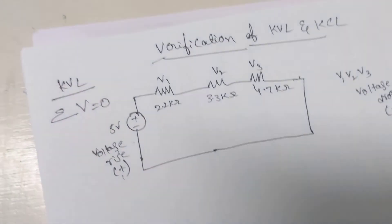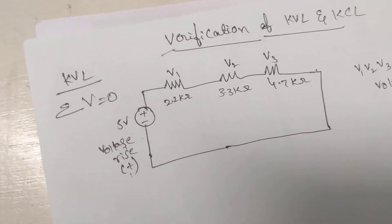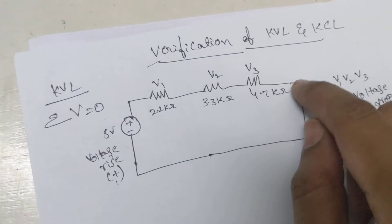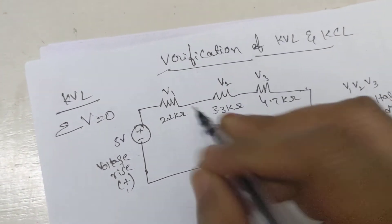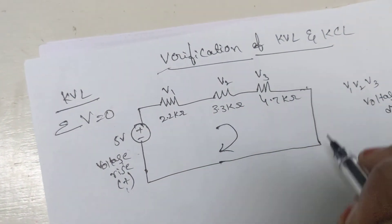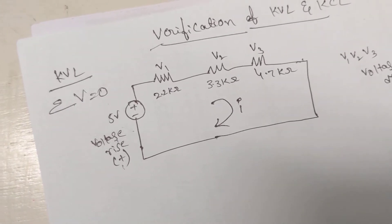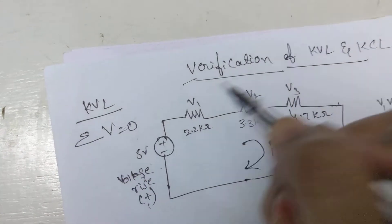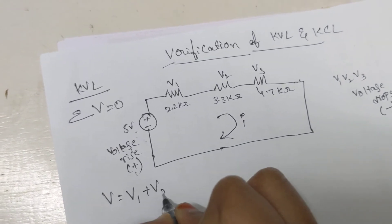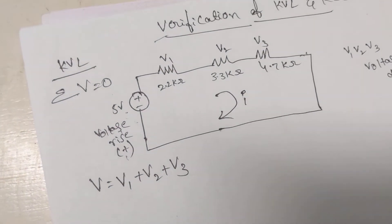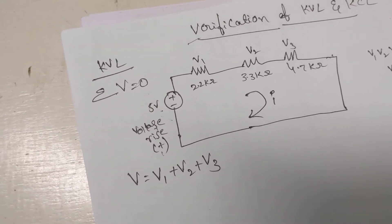As per KVL, the sum of all the branch voltages in a closed loop will be equal to zero. This is a closed loop because there is no division of current here — the entire circuit carries the same current because all the elements are connected in series. Throughout this loop the current is I. So the applied voltage V should equal V1 plus V2 plus V3.